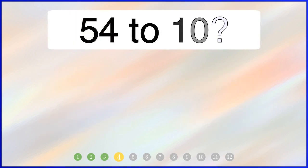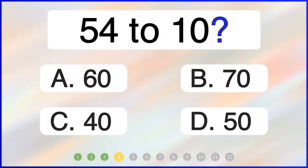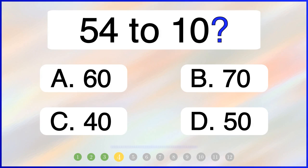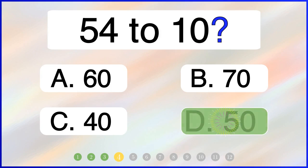What is 54 rounded to the nearest 10? The correct answer is option D: 50.